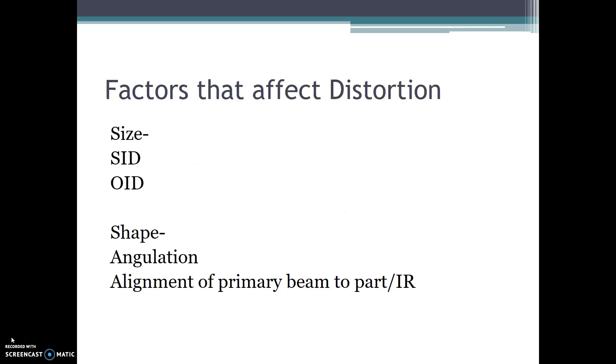The factors that affect distortion include SID and OID. They affect the size distortion or magnification. Shape distortion is affected by angulation of the beam or of the part and alignment of the primary beam to the part or image receptor.